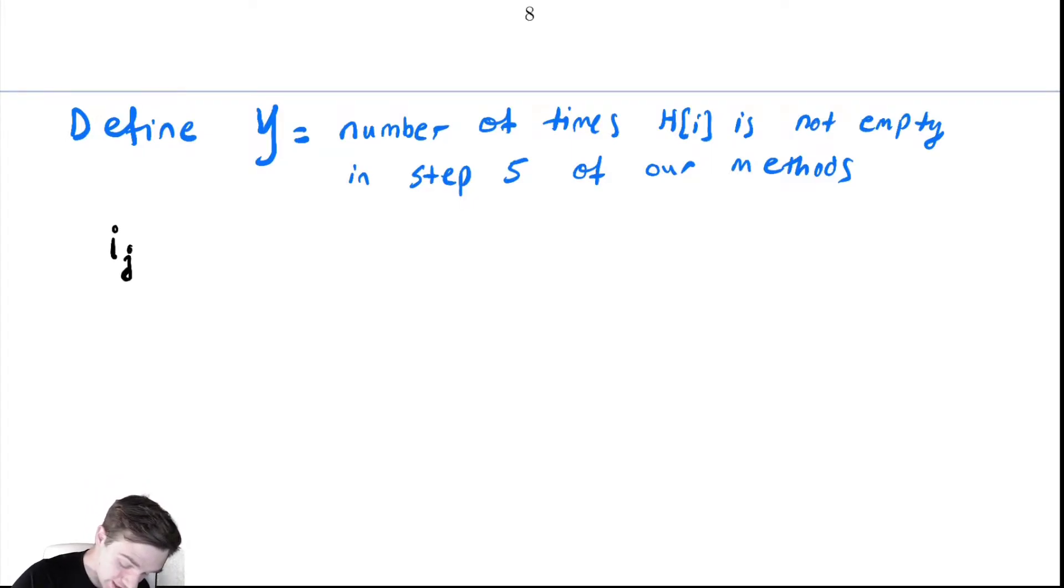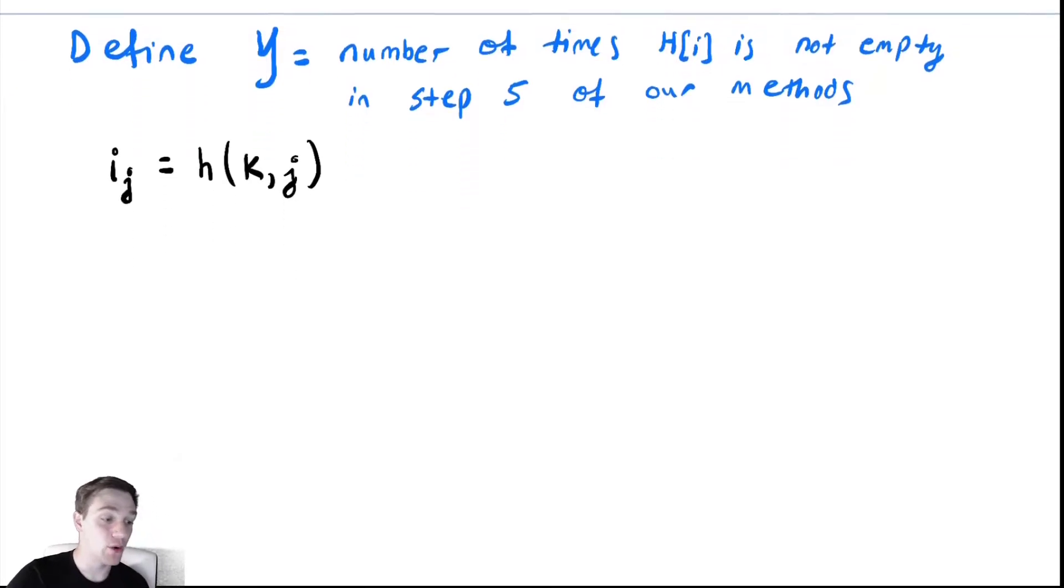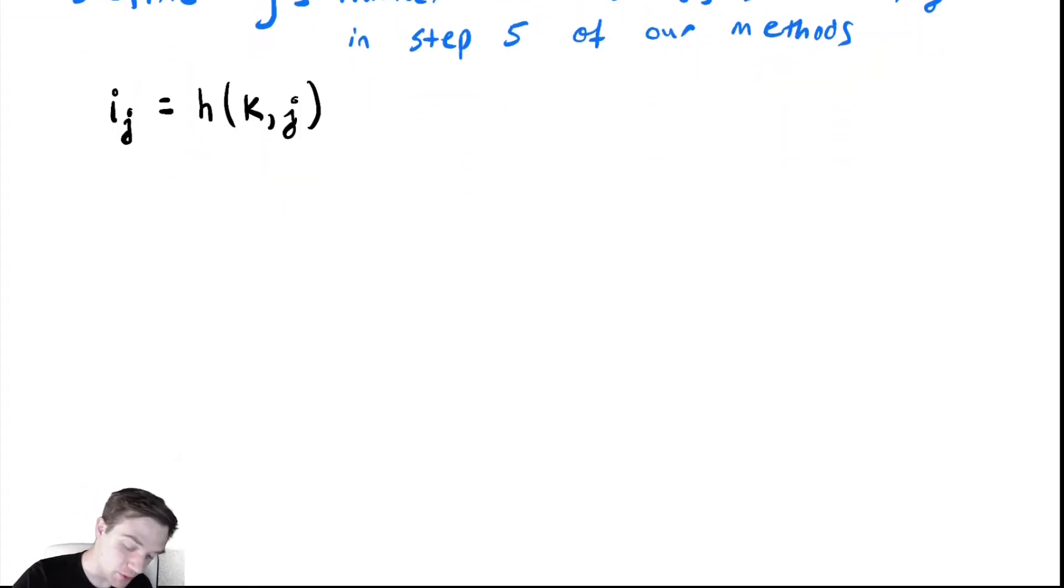Let's say i_j = h(k,j). This lets us say what is the jth value we get when continually rehashing. i_0 is our first attempt at hashing.